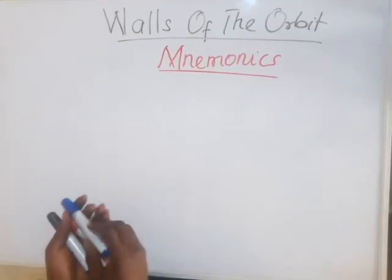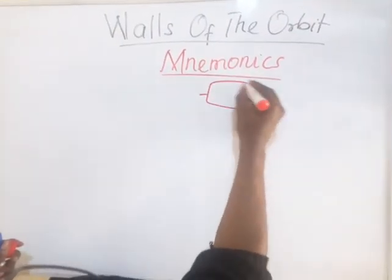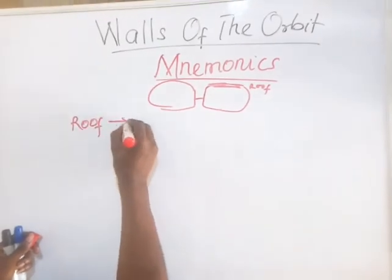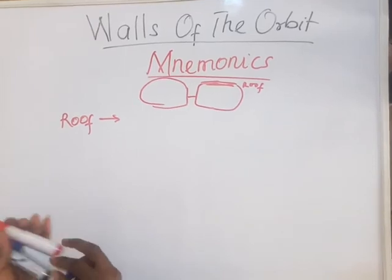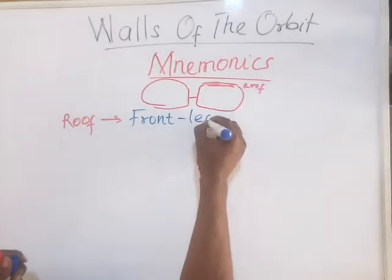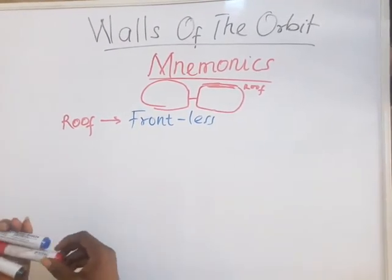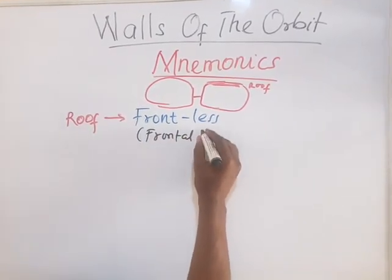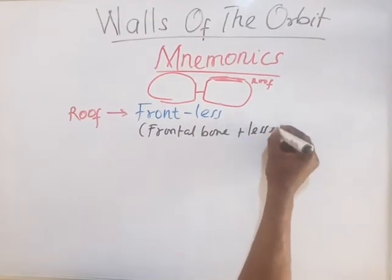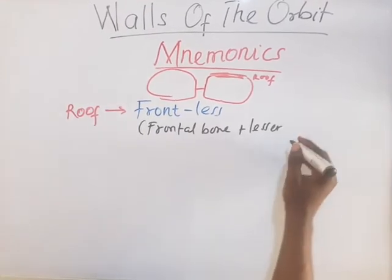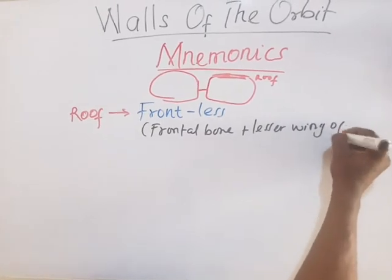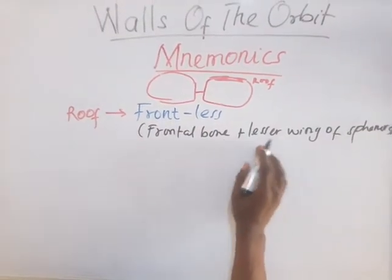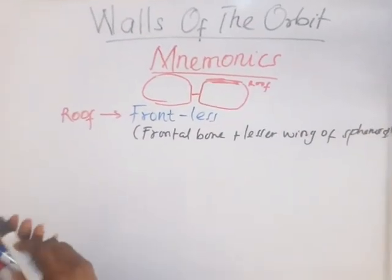For the roof, the mnemonic is 'FRONT LESS.' Front means the frontal bone — that is the first bone of the roof. Less means the lesser wing of the sphenoid. So for the roof of the orbit you have two bones: the frontal bone and the lesser wing of the sphenoid.